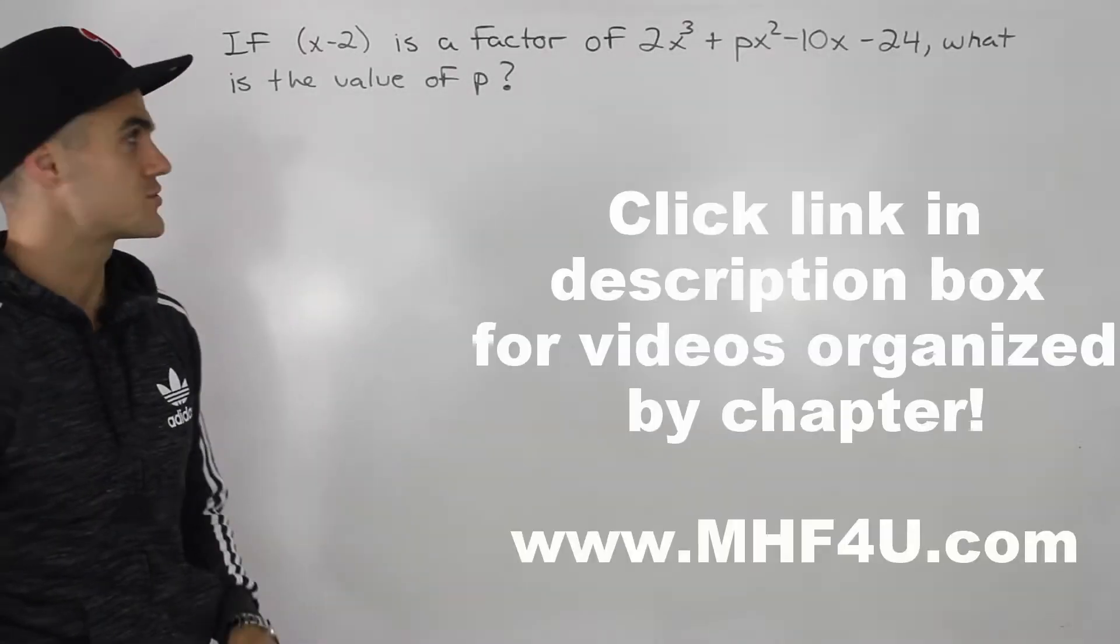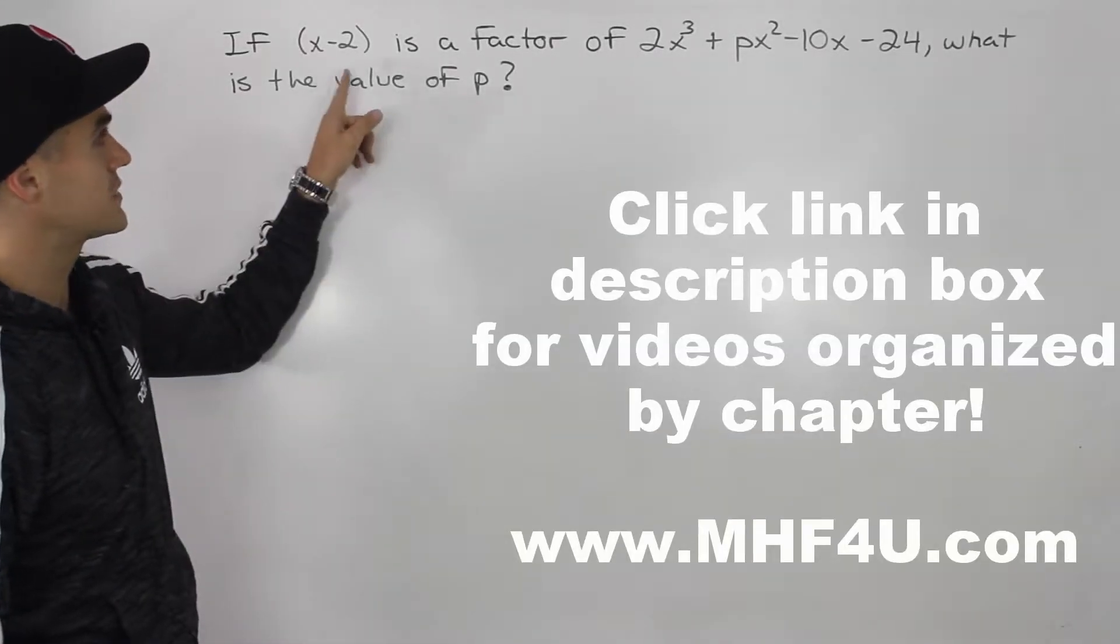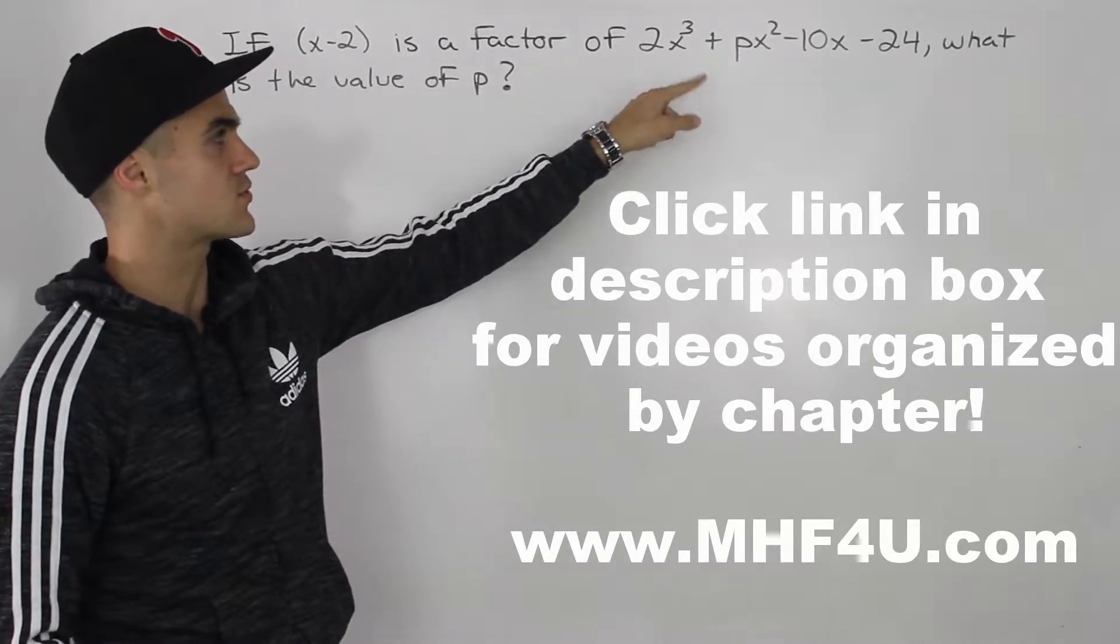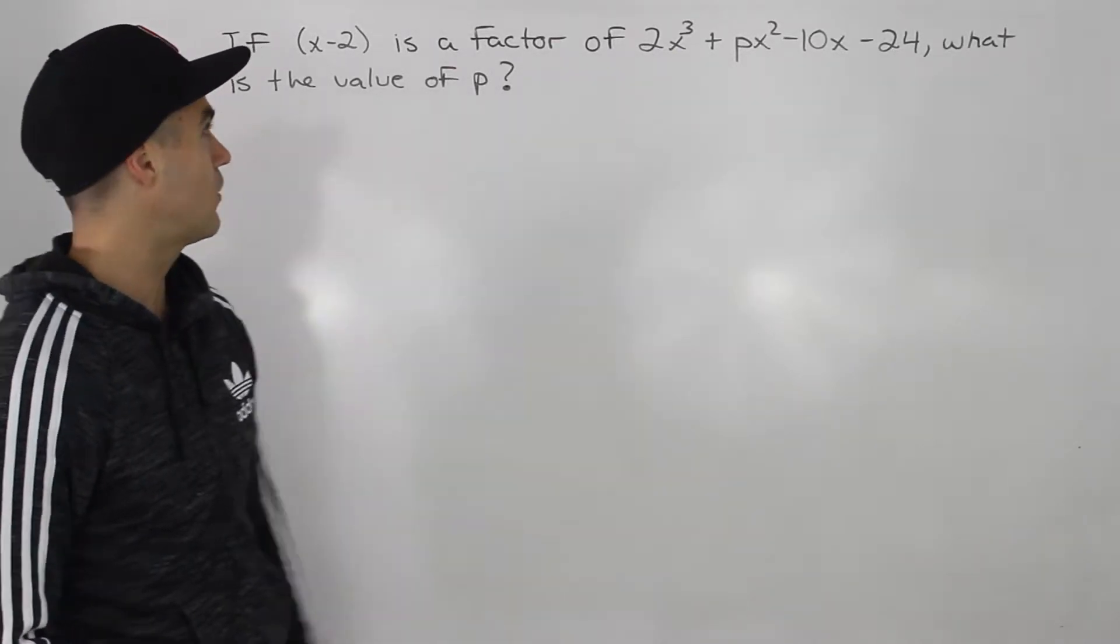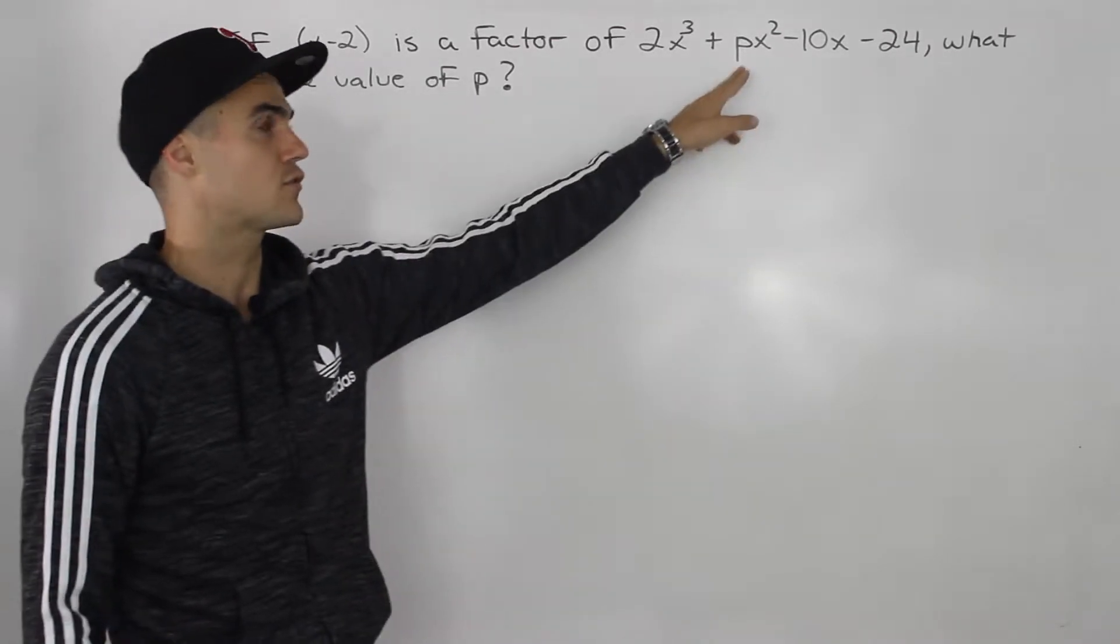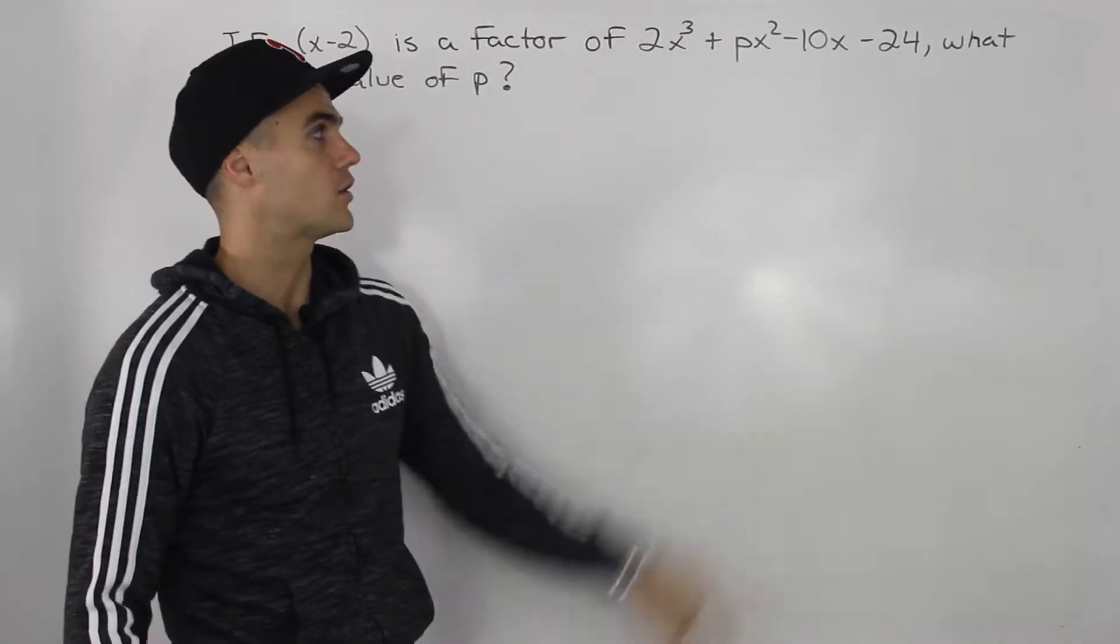What's up, everybody? Patrick here, moving on to another question. If x minus 2 is a factor of 2x cubed plus px squared minus 10x minus 24, what is the value of p? So we're solving for this constant here in this polynomial.